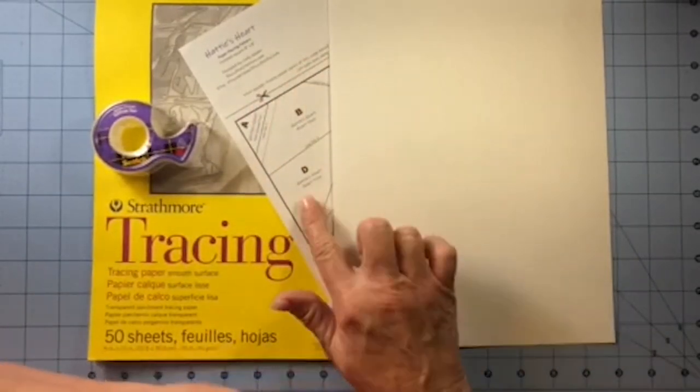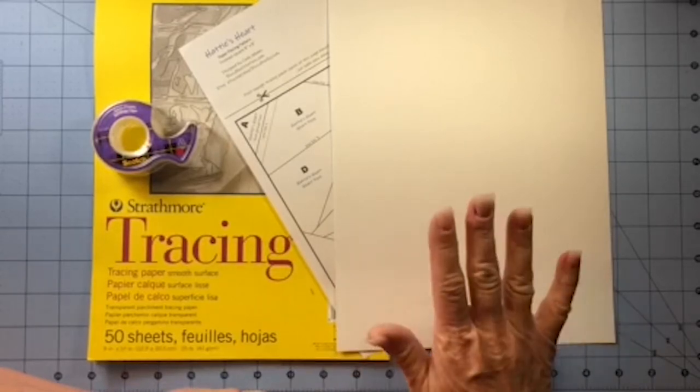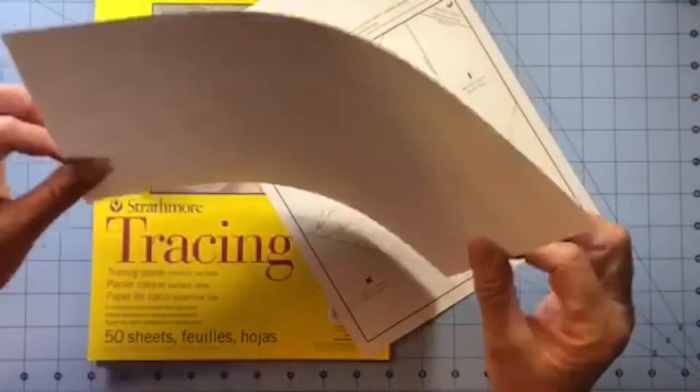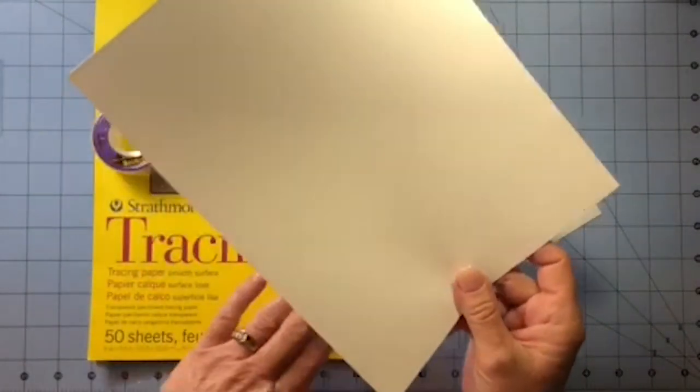This is a paper piecing pattern for a pattern I created called Hattie's Heart and I prefer to use cardstock rather than regular paper for this task. Let me show you how you do it.